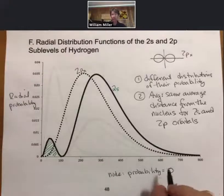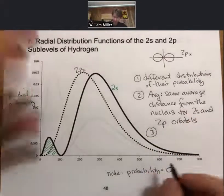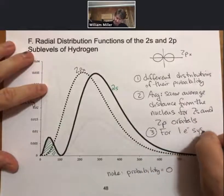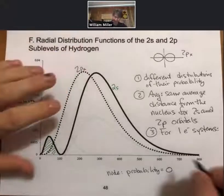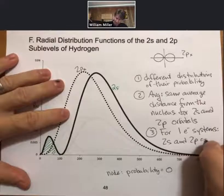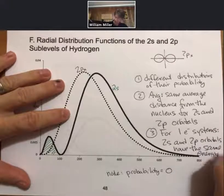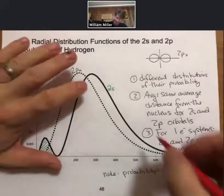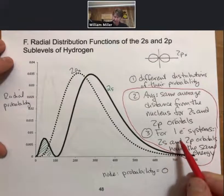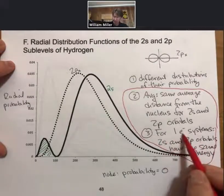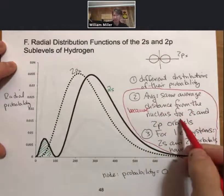And so what we will then use this for, and this is one of the questions on the homework, so for one electron systems, we will see that 2s and 2p orbitals have the same energy. 2s and 2p orbitals have the same energy, and we will have you know that they do have the same energy only for one electron systems, and it is because they have the same average distance from the nucleus.